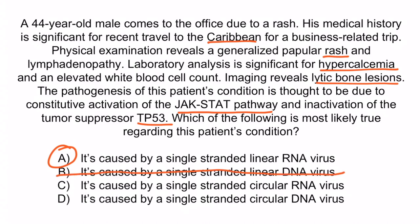C is describing the RNA structure of bunyaviruses, and these are not associated with adult T-cell leukemia lymphoma. D is a red herring because there isn't a single-stranded circular DNA virus. Remember, DNA viruses are all double-stranded except parvovirus, and the DNA viruses that are circular are also double-stranded. So D is incorrect.